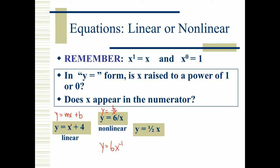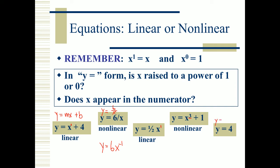y = one-half x: is x raised to the power of one? Yes. Is it in the numerator? Yes. So we call that linear. What about y = 3x³ + 1? It is raised to the power of three, so we call that nonlinear. Lastly, y = 4: technically there is a zero coefficient in front of x, but since zero times x is zero, this is considered linear. If you graph y = 4, it's a horizontal line.